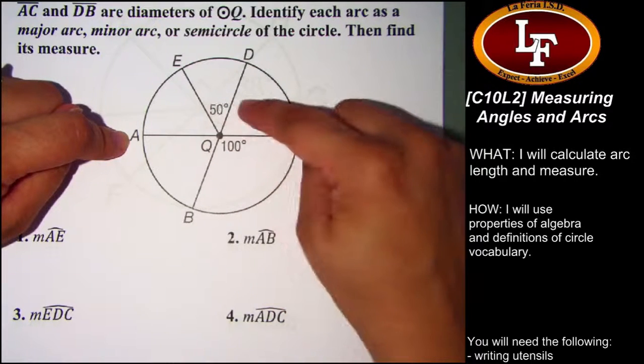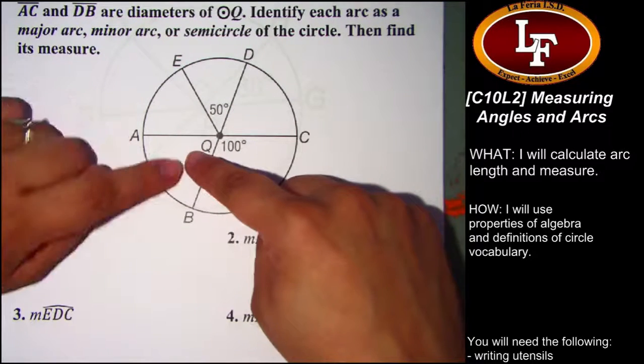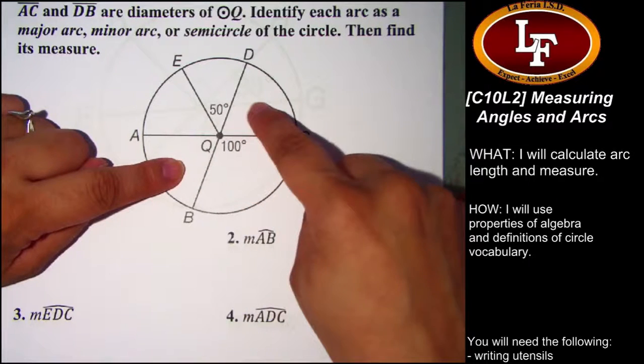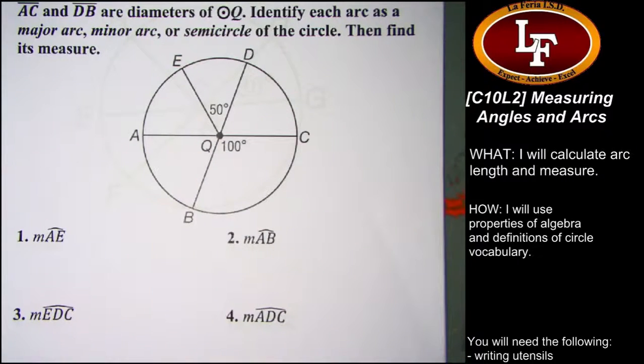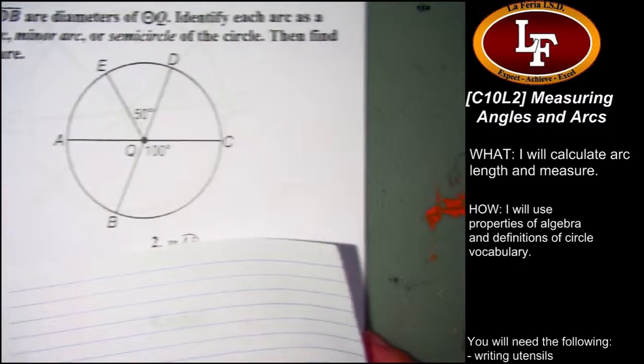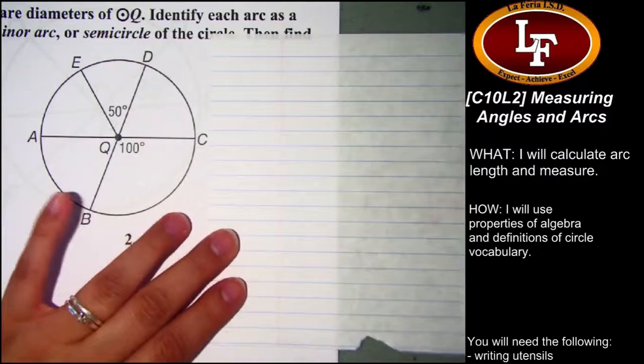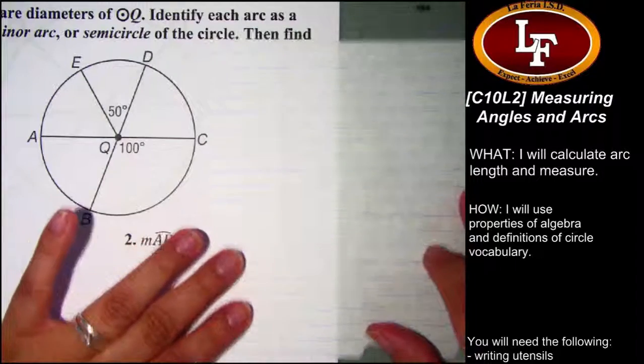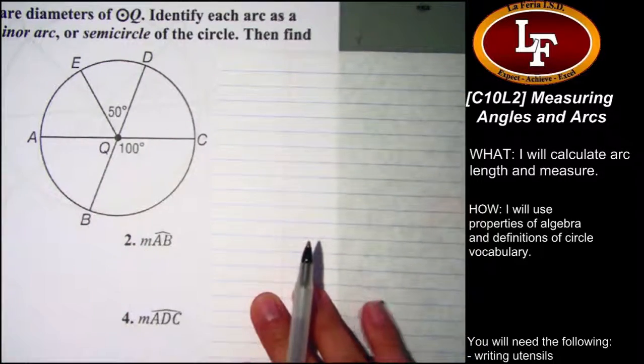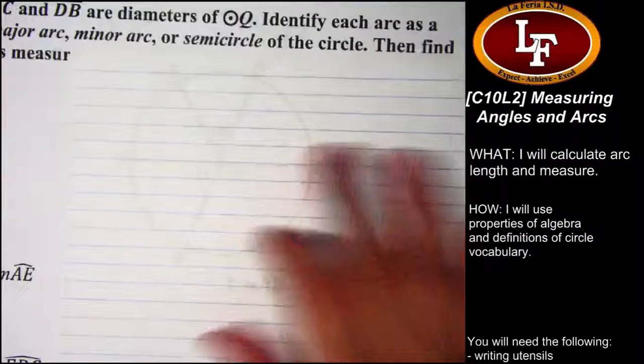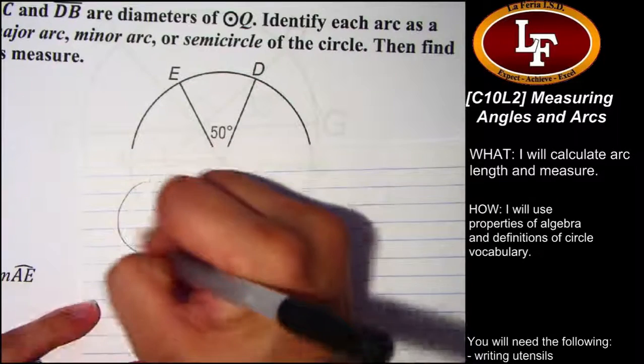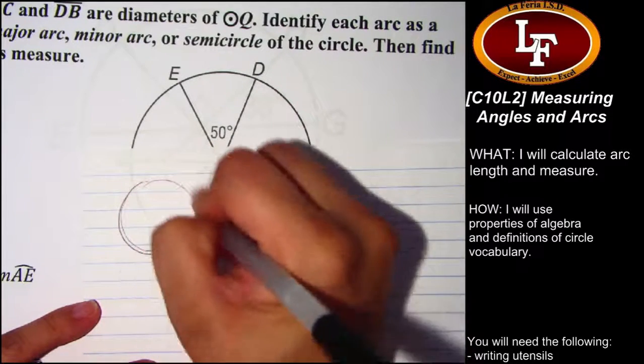We're also missing some angle measures here. I suggest you take a moment to figure out what these missing angle measures are. We can use the sum of central angles, which states that all the angles in a circle add up to 360 degrees. I'm going to move the circle over and zoom in.